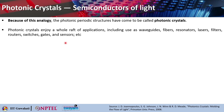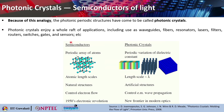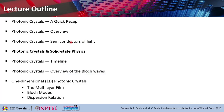Because of this analogy, photonic periodic structures have come to be called photonic crystals. Photonic crystals enjoy a whole raft of applications — they can be used as waveguides, filters, resonators, lasers, fibers, routers, switches, gates, sensors, etc. You can think of making any kind of optical communication system using photonic crystals. That way, photonic crystals are a very handy concept and a very handy tool for optical engineers.